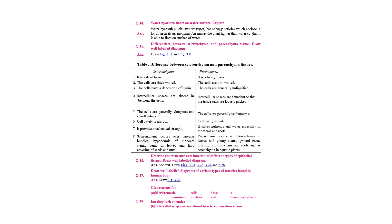Water hyacinth floats on the water surface — explain. Water hyacinth has spongy petioles which enclose a lot of air in its aerenchyma. Air makes the plant lighter than water so that it is able to float on the water surface.